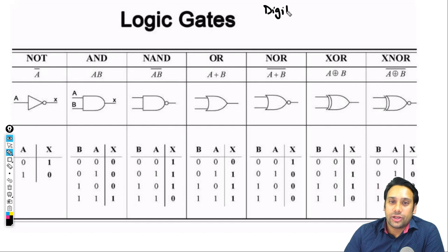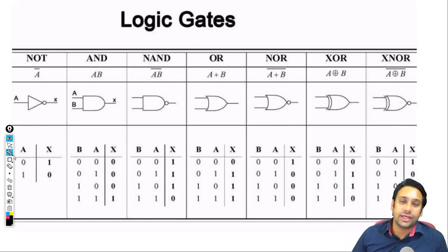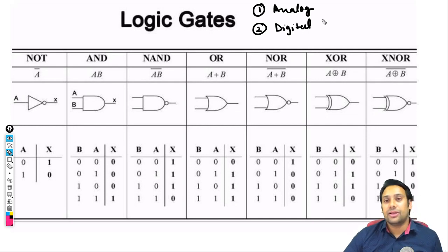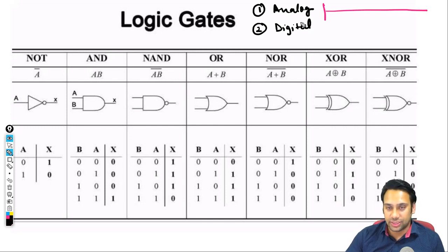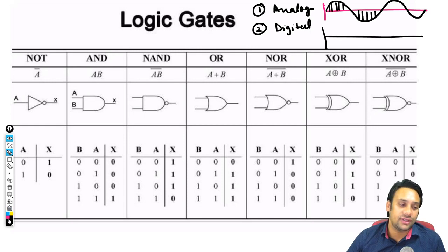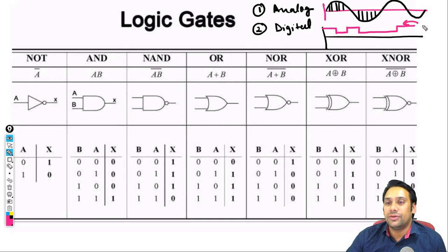जो दूसरा आपका component है वो है logic gate. Basically जो आपके computers होते हैं they are called as digital computers. We have two kinds of signals — the first kind is your analog signal and the second kind is your digital signal. Analog signal का मतलब है कि जो भी signal है वो कुछ इस form में transfer होगा, where the amplitude value of the signal matters.